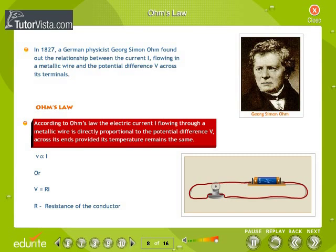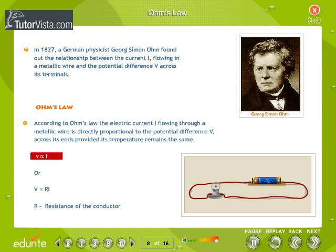This relation between potential difference and current is called Ohm's Law. According to Ohm's Law, the electric current I flowing through a metallic wire is directly proportional to the potential difference V across its ends, provided its temperature remains the same. Mathematically, Ohm's Law can be written as V directly proportional to I, or V equals RI, where R is the constant of proportionality called the resistance of the conductor.